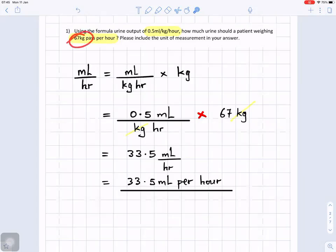And we are given the mass in kilograms of the person, the weight of the person in kilograms. So when you multiply milliliters per kilogram per hour times kilograms, the kilograms will cancel out. The kilograms cancel, you're left with milliliters per hour.